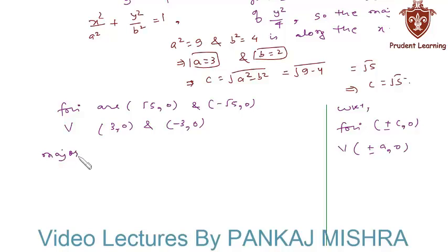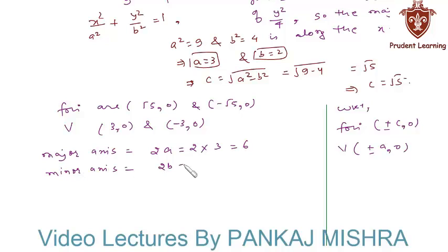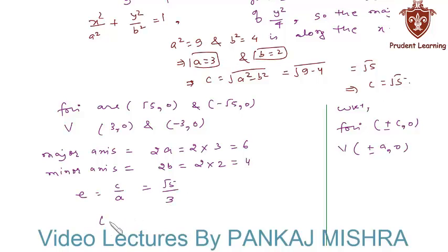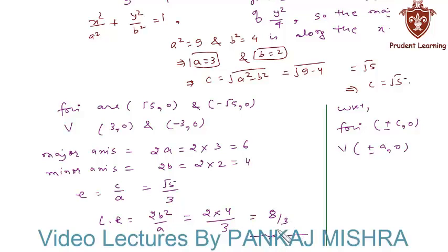Length of major axis is equal to 2a, that is 2 × 3 = 6. Length of minor axis is equal to 2b, that is 2 × 2 = 4. Eccentricity is equal to c/a, so substituting the values of c and a we have √5/3. Finally, length of latus rectum is equal to 2b²/a = 2 × 4/3 = 8/3. This completes our solution.